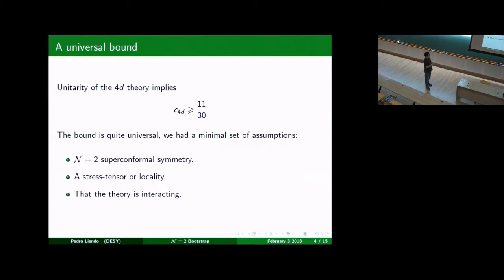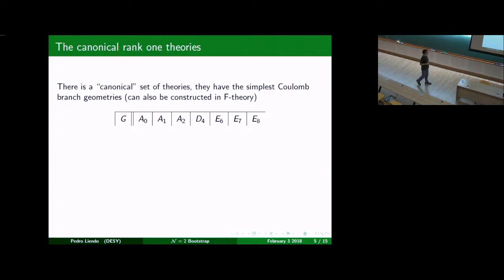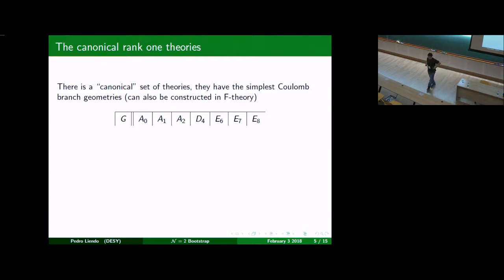The question that was posed in the N equals three case can also be posed in N equals two: is this bound saturated by a known theory? If you go through the N equals two literature, there is a very special family of theories — I call them the canonical rank-one theories. They are theories that have one-dimensional Coulomb branches, and they have flavor symmetries. In N equals two theories you can have flavor symmetries — exceptional groups, SO(8), and SU(N) groups.